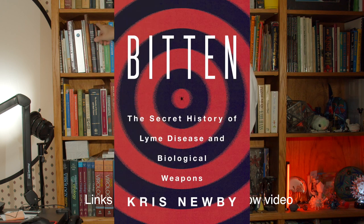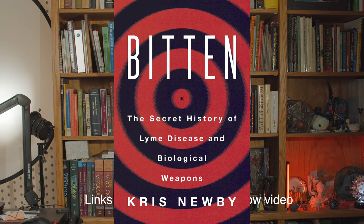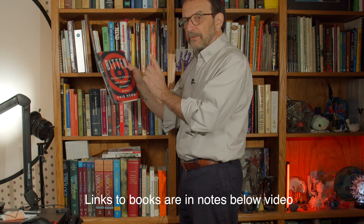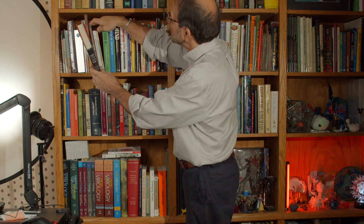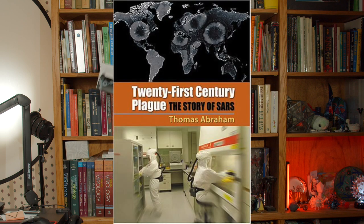All right, so here we have Bitten. That's by Chris Newby. The Secret History of Lyme Disease. Now Chris Newby sent this to me a while ago with the idea of us doing a TWIM, but we haven't done it yet. This one is really good. You should read it. 21st Century Plague by Thomas Abraham. This is the story of SARS. That's SARS-1, not 2, SARS number 1. A lot of detail about how that got started and what happened. And in today's SARS-2 environment, this is a really good read.